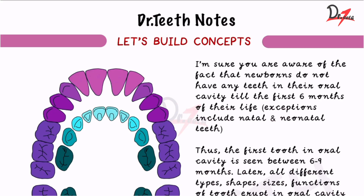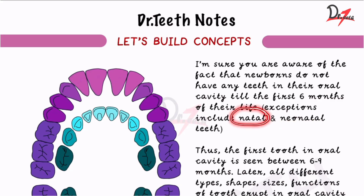Let's start by building the concepts. I'm sure you are aware that newborns do not have any teeth in their oral cavity till the first six months of their life, but there are exceptions. These exceptions are called the natal and the neonatal teeth. Neonatal teeth is where the child has their first teeth erupt within the first month of birth. Natal teeth is where the child already has teeth when they are born.